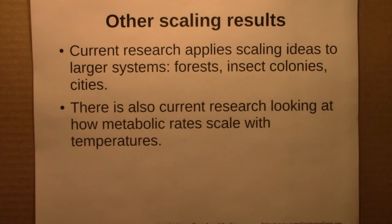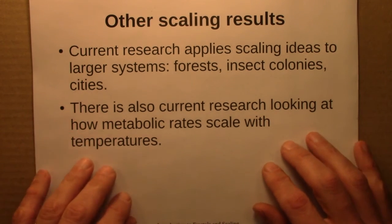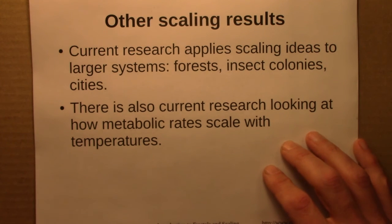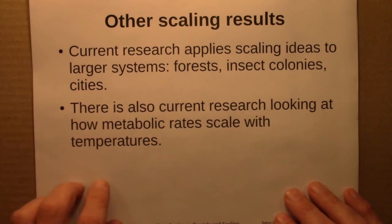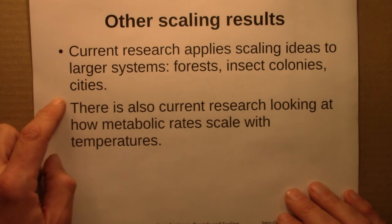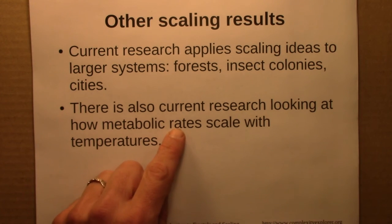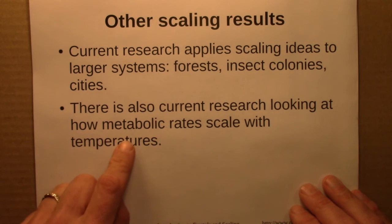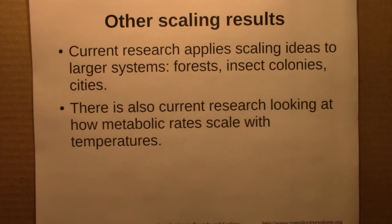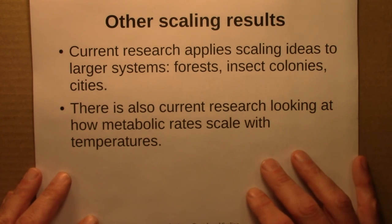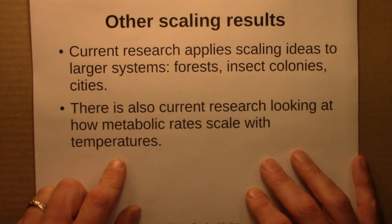These basic scaling ideas have been pushed beyond the boundaries of metabolism. There is current research applying these scaling ideas to larger systems: forests and not just individual trees, insect colonies and not just individual insects, and cities and not just individual humans. There is also current research on how metabolic rates and related biological processes scale with temperature — not a power-law relationship, but interesting work very much inspired by this and in a similar flavor, starting with basic physics and chemistry to look for patterns across many organisms.